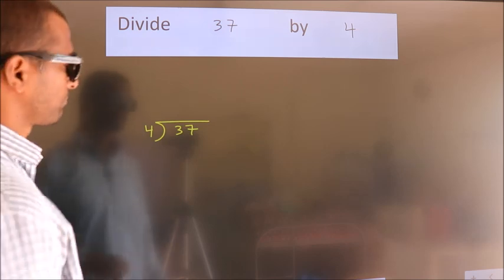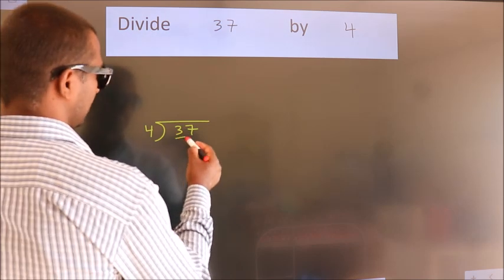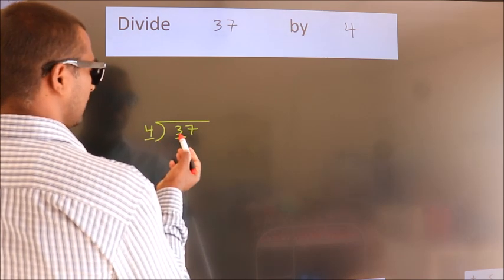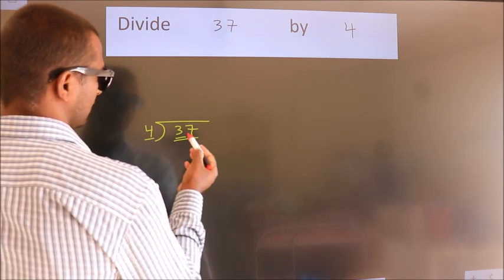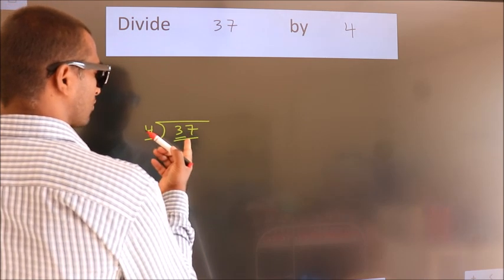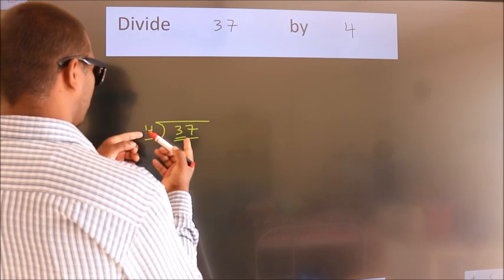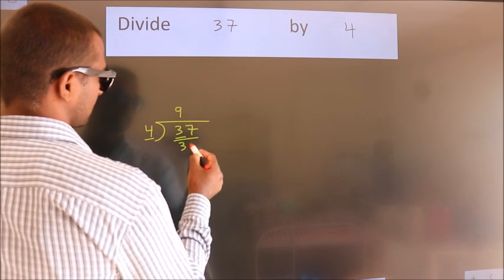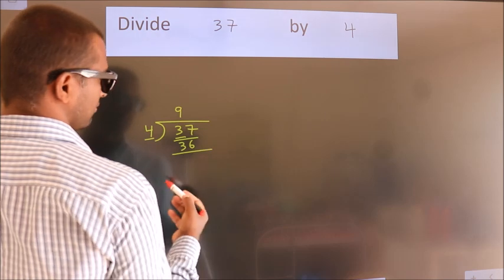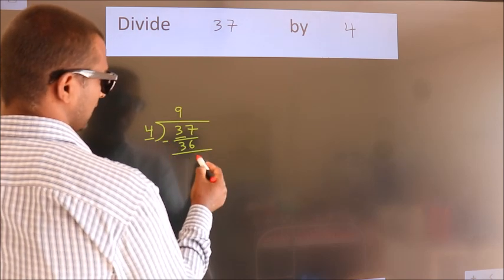Next. Here we have 3, here 4. 3 is smaller than 4, so we should take 2 numbers, 37. A number close to 37 in the 4 table is 4 nines, 36. Now we should subtract. We get 1.